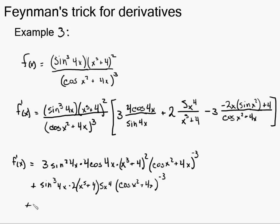And then I have one more term. I leave the first two alone, sine cubed 4x times x to the 5th plus 4 squared. And then I have to take the derivative of this function. So I do power rule 3 times cosine x squared plus 4x, this squared times the derivative.